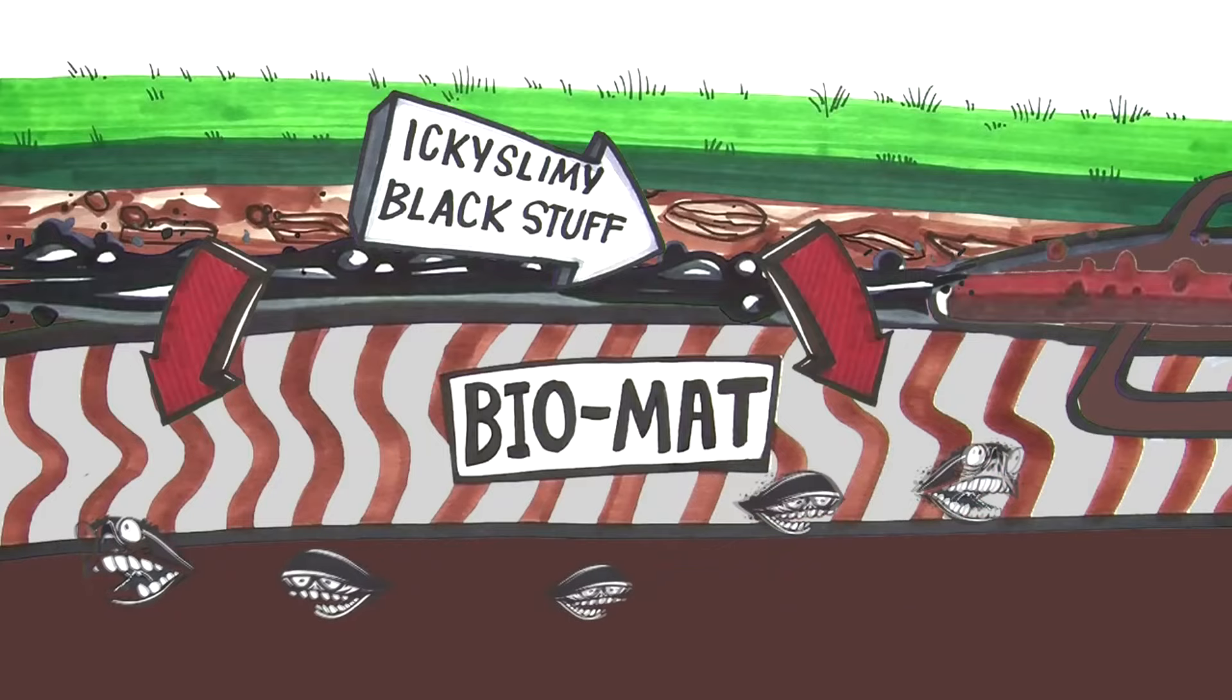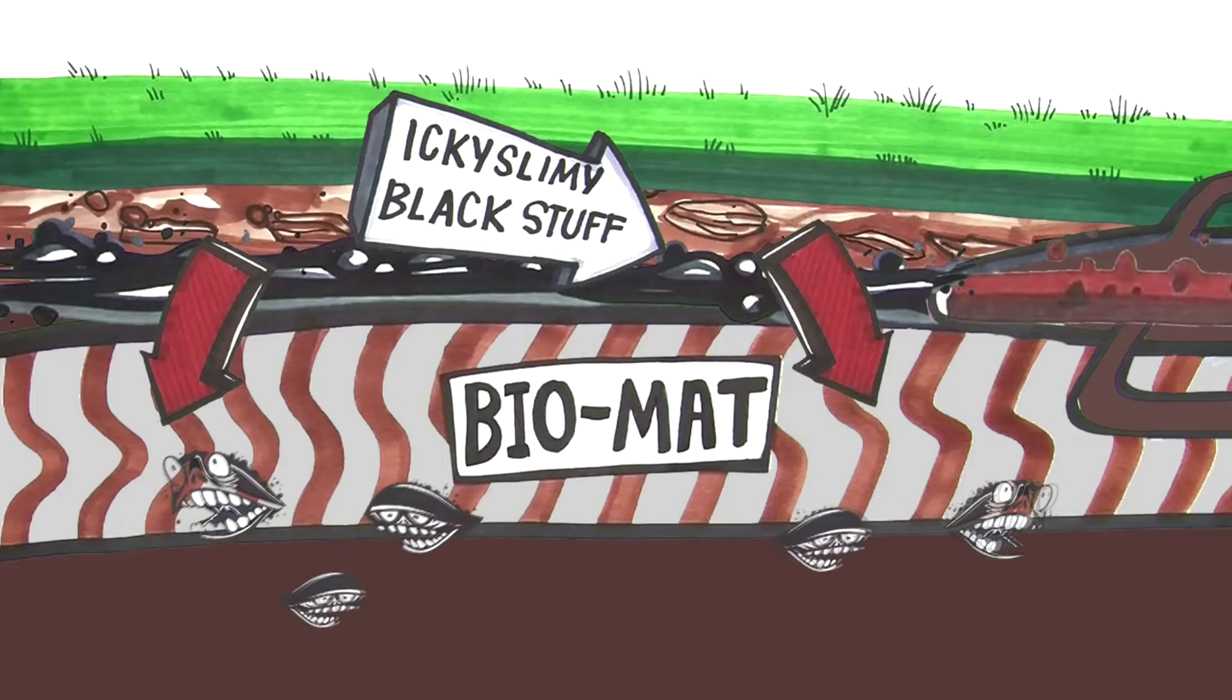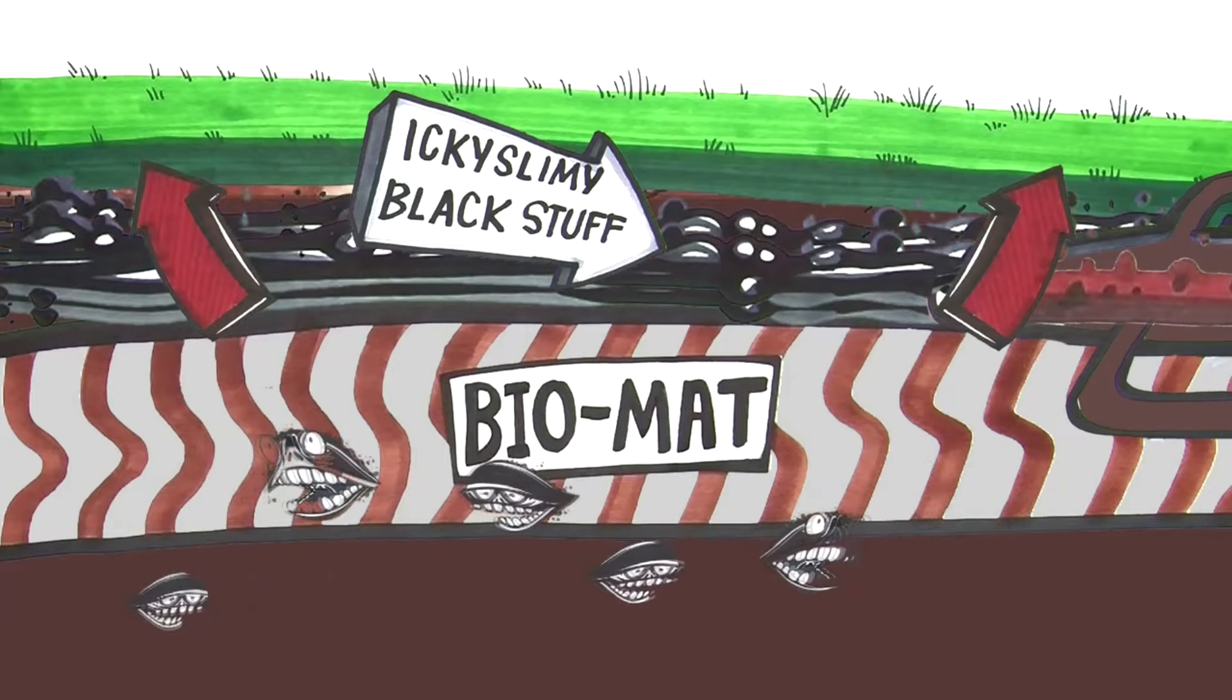Wastewater can still flow through this biomat initially, but over time, the accumulation of this substance becomes too much, leading to a clog and, inevitably, system failure.